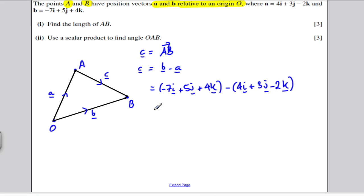I'm going to do this subtraction, minus 7 minus 4 is minus 11i, 5 minus 3 is plus 2j, and 4 minus minus 2 is 6k. So this vector here, C, is given by here.